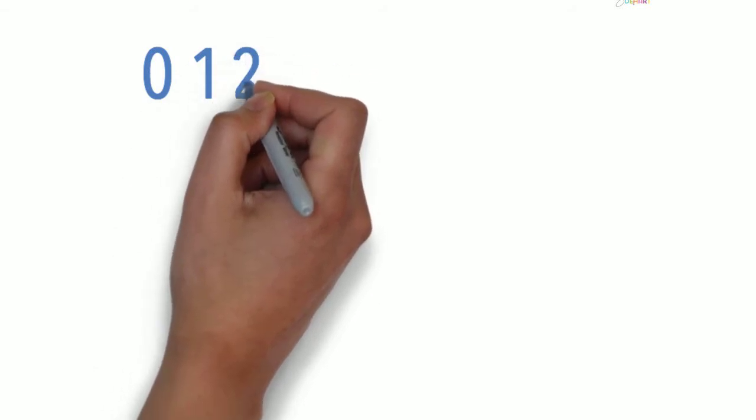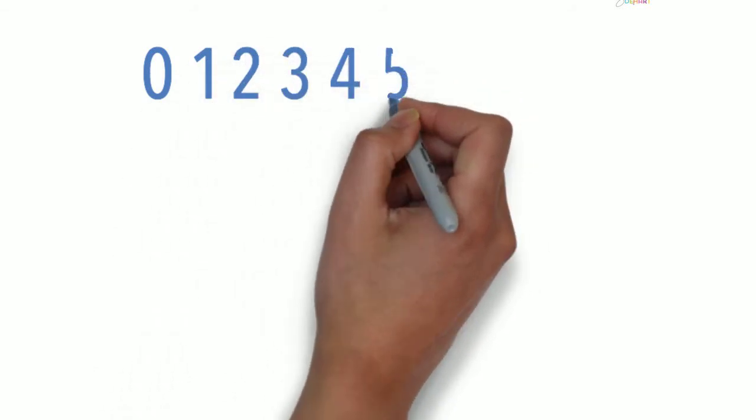Numbers zero to nine are ones and have one digit. It's easy to show the value of ones with objects from the real world because you don't need many of them.